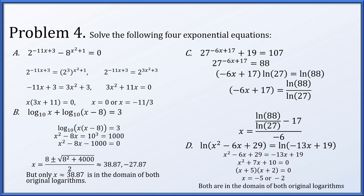Part d: ln(x² − 6x + 29) = ln(−13x + 19). Since the logs are equal, the arguments must be equal: x² − 6x + 29 = −13x + 19, giving x² + 7x + 10 = 0, so x = −5 or x = −2. Checking both in the original expressions, both values yield positive arguments for the logarithms, so both x = −5 and x = −2 are valid solutions.